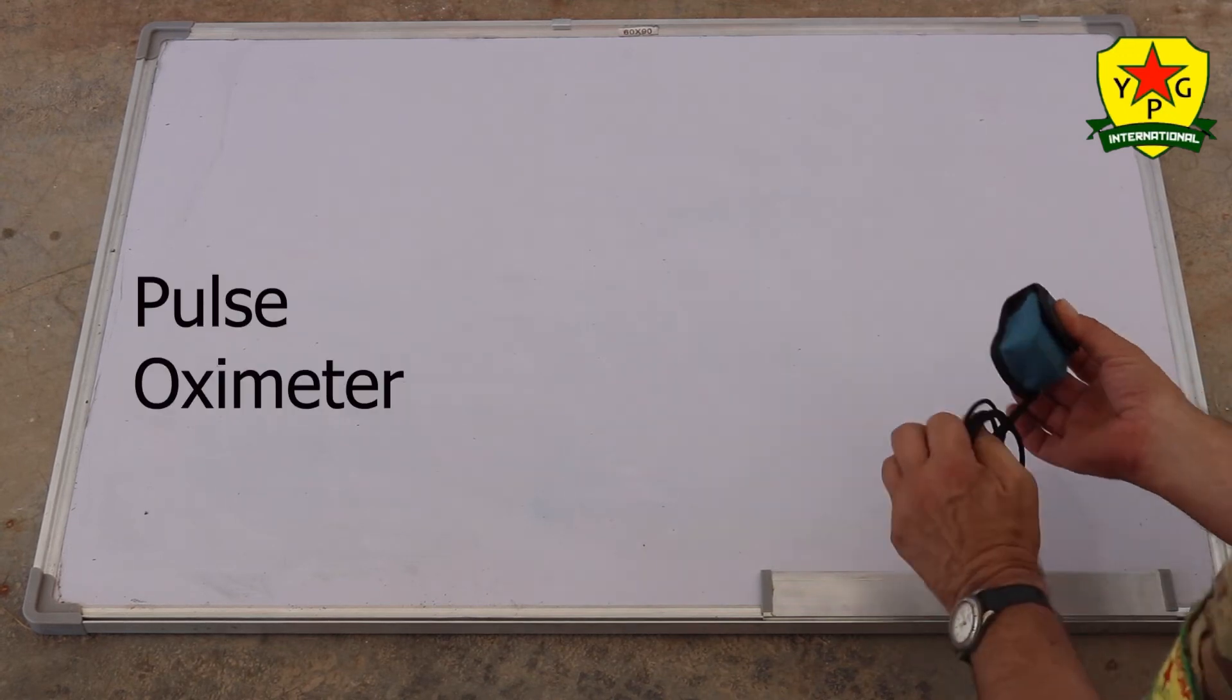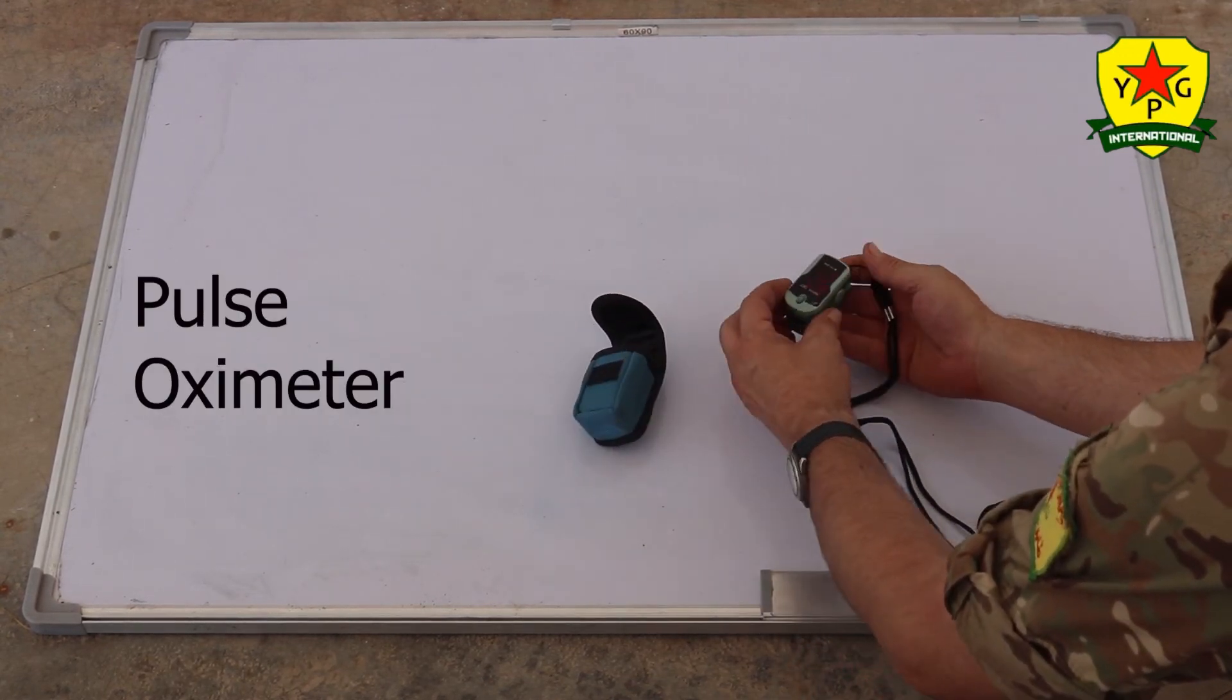Next, a pulse oximeter. This reads your heart rate and your blood oxygen levels.